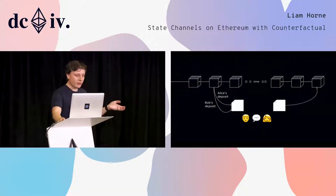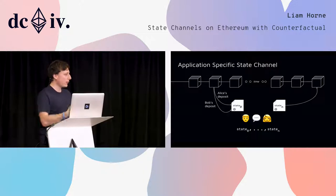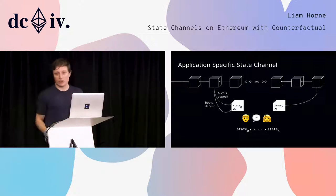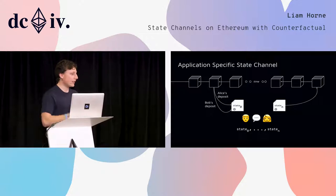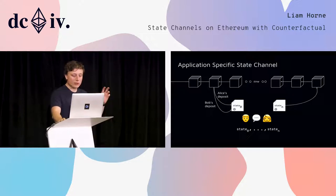So what's an app-specific state channel? What's FunFair doing? It's very similar, but they have arbitrary state — different state per application, whether it's roulette, blackjack, or whatever. They have this additional thing on-chain: the application logic to handle disputes, or cases where someone deviates from the protocol and you need to figure out who actually won the game. That's how they get provable fairness.